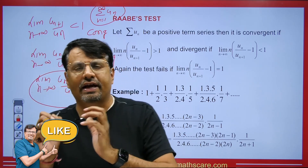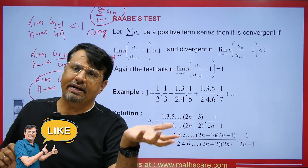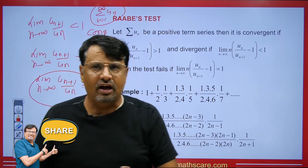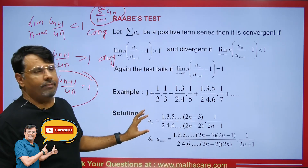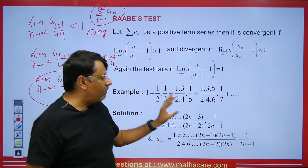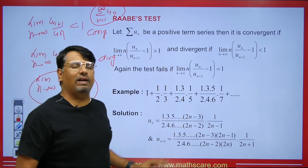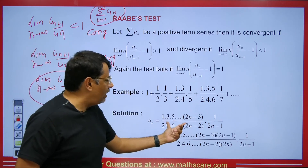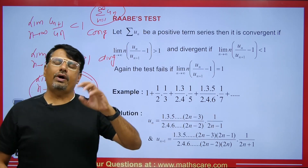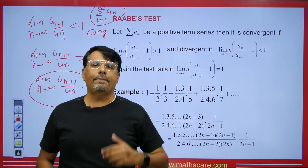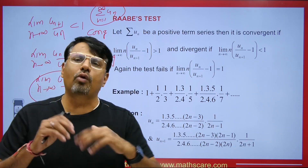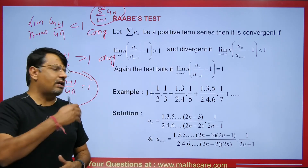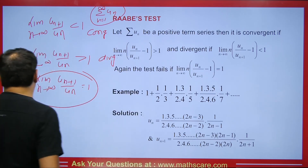You might be wondering when to use Raabe's Test versus the logarithmic test. If the u_n term has power 1 coming inside that term, we will apply Raabe's Test. If we get the whole square of the total, then we use the logarithmic test, which I will explain in the next video.